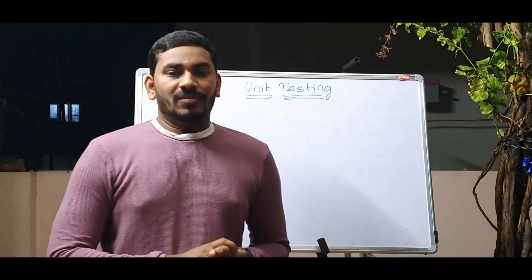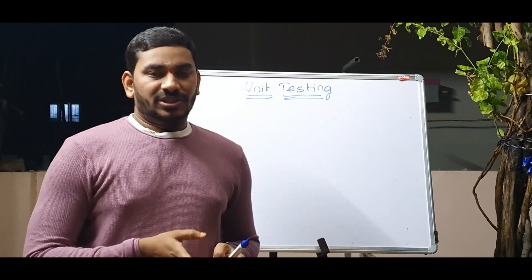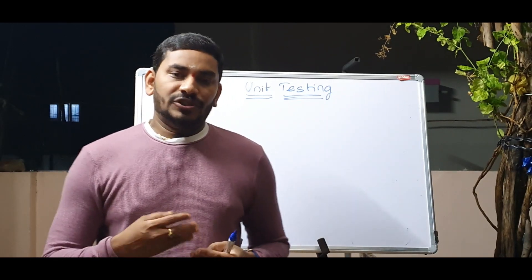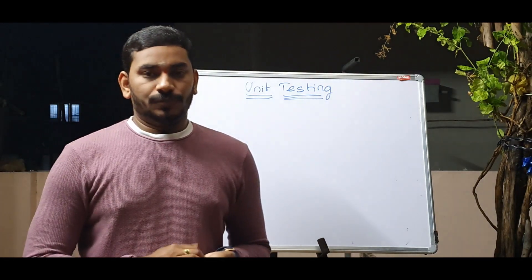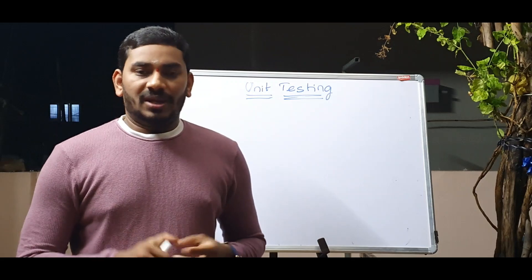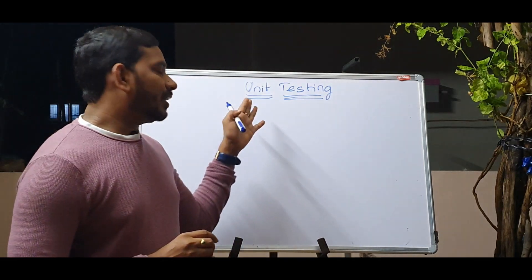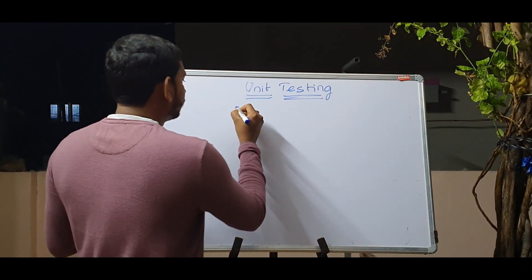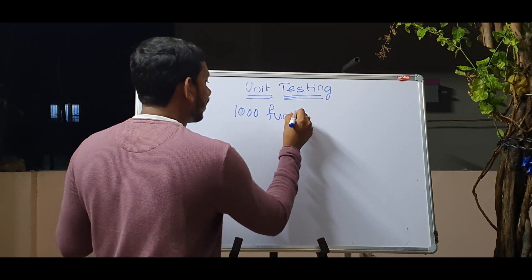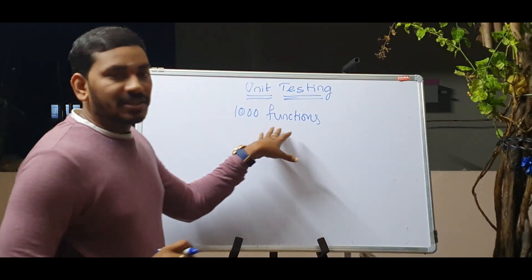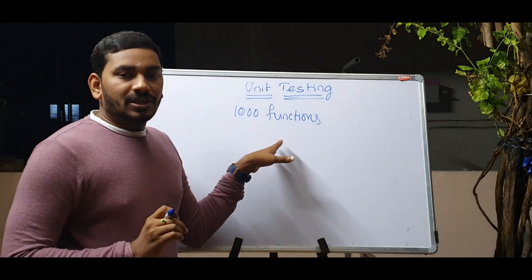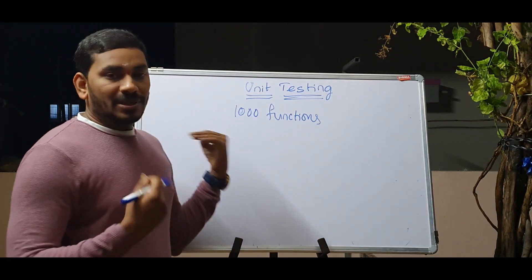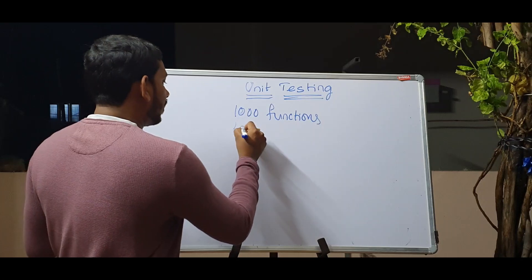Now we will discuss unit testing. Unit testing is mentioned in DevOps but it is very important for the application. When we find many defects, we filter them out during unit testing — this is done by developers. For example, if an application has 1000 functions, unit testing will test those functions. This does not need extra effort from DevOps; it filters defects for developers. We add around 80% coverage across those functions.